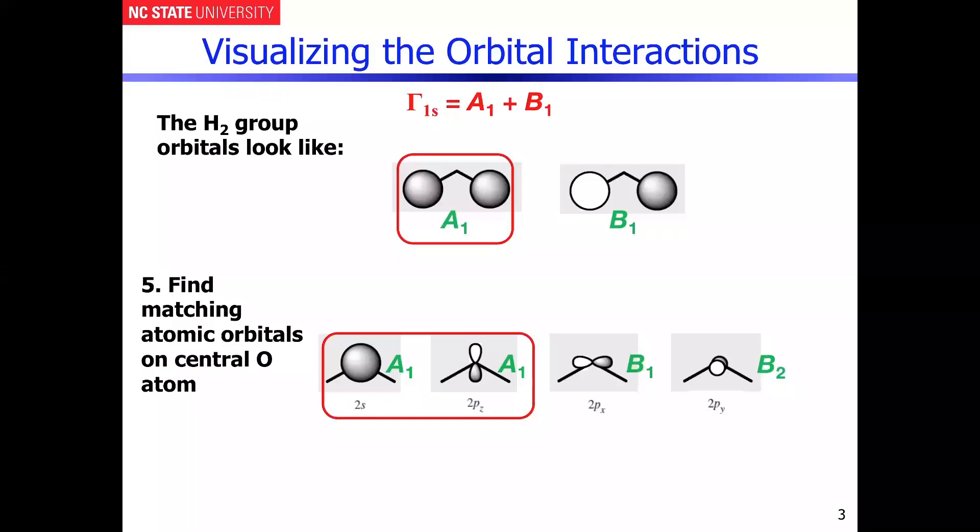So the next interaction to consider are going to be the B1 combinations that are shown here. And the B1 combinations illustrate the point that you have another possible bonding combination, but now these are actually directed along the direction of the x-axis.